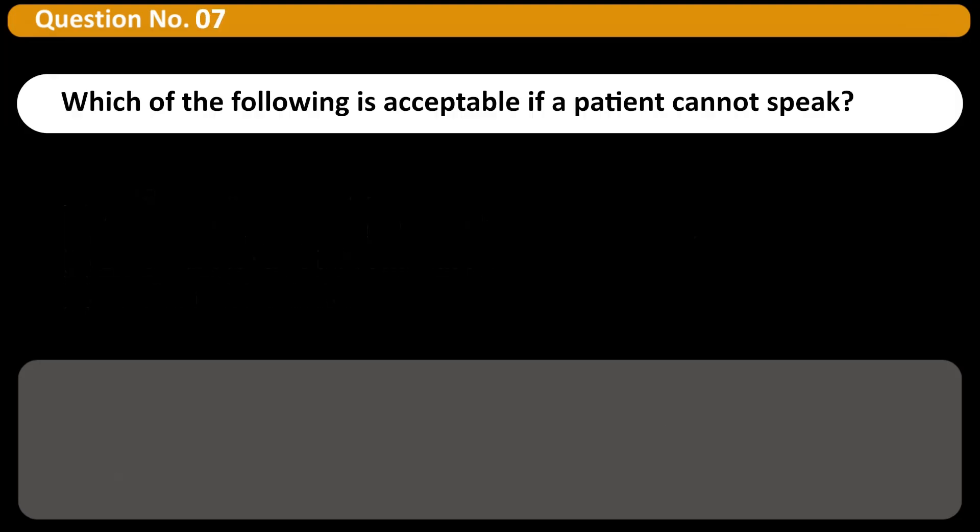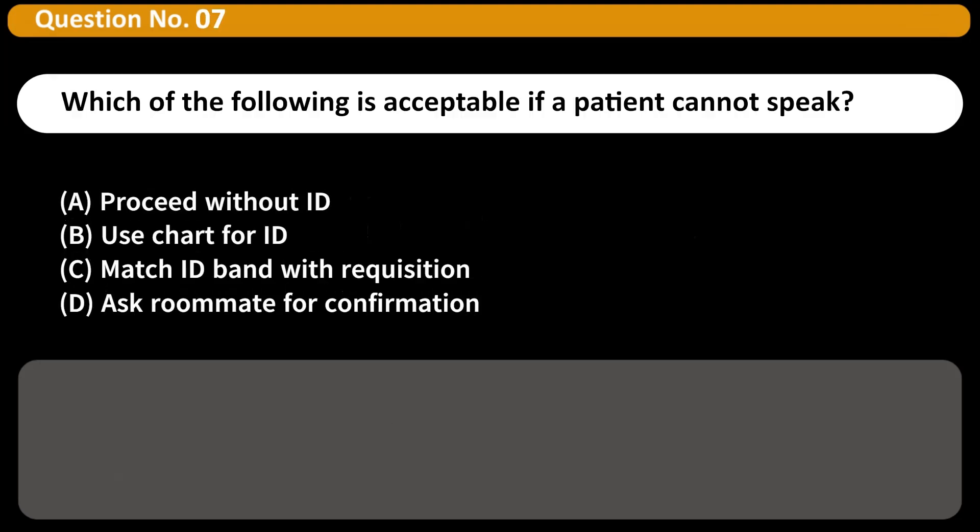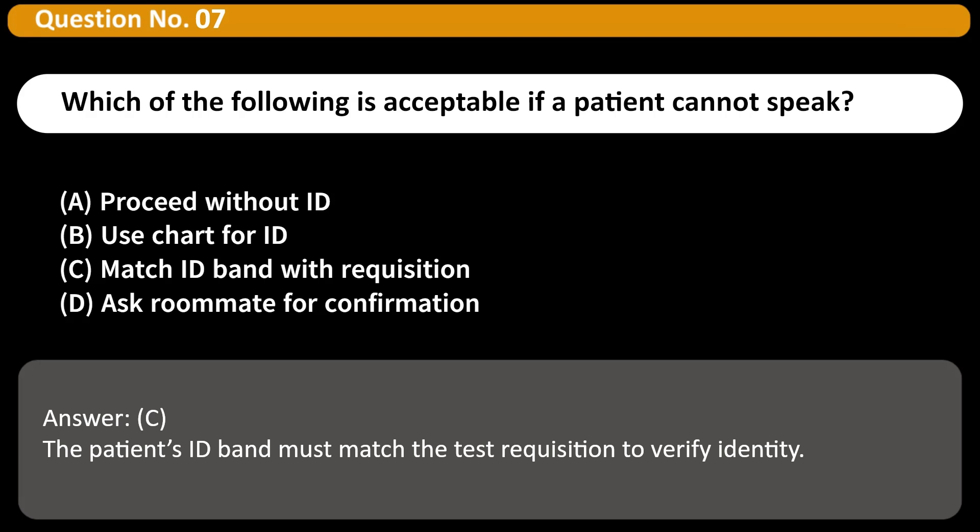Which of the following is acceptable if a patient cannot speak? A. Proceed without ID. B. Use chart for ID. C. Match ID band with requisition. D. Ask roommate for confirmation. Answer: C. The patient's ID band must match the test requisition to verify identity.